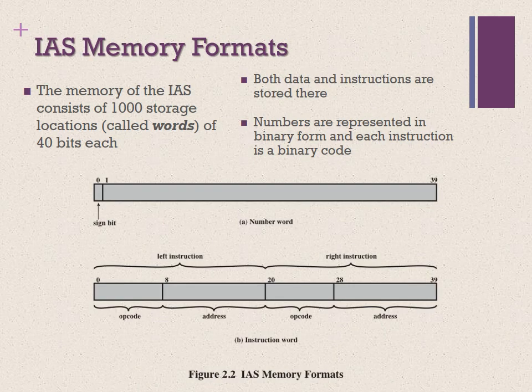The memory of the IAS consisted of 1,000 storage locations called words of 40 binary bits each. Both data and instructions are stored there. Numbers are represented in binary form and each instruction is a binary code. As illustrated in figure 2.2, each number is implemented by a sign bit and a 39-bit value. A word may also contain two 20-bit instructions, each consisting of an 8-bit operation code (opcode) specifying the operation to be performed, and a 12-bit address designating one of the words in memory, numbered 0 to 999.